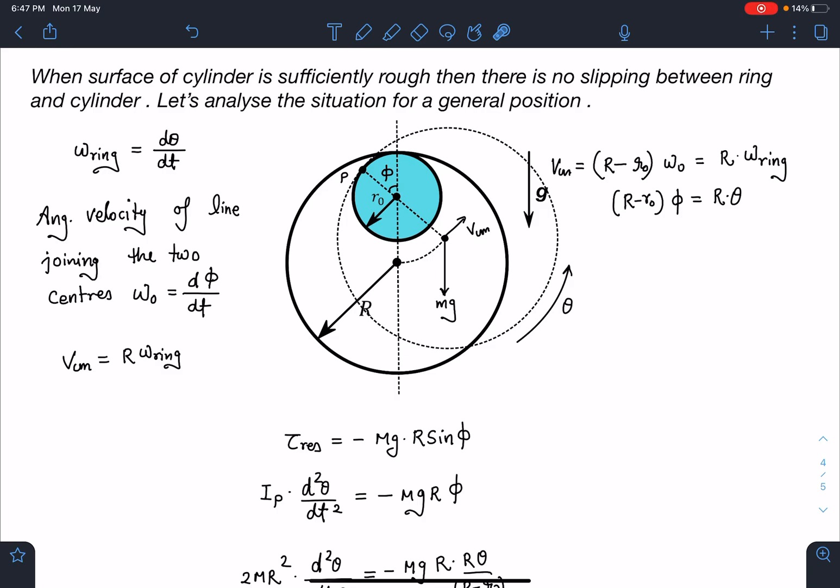minus sign is coming because of kinematics of it. So MgR sin φ. Now τ restoring, I can write about this IP·α. α will be angle rotated by this body. So IP·d²θ/dt², that is going to be the value of τ restoring here. And here this is going to be -MgR·φ.